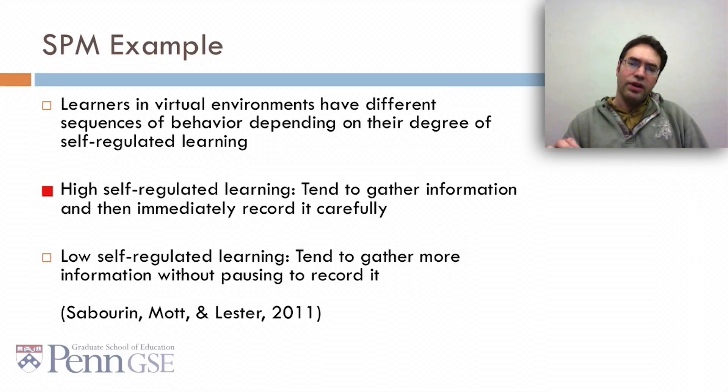For example, students with high self-regulated learning tend to gather information and then immediately record it carefully. Whereas students with low self-regulated learning tend to gather more information without pausing to record it.